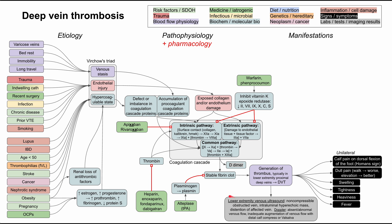The imaging test for DVT is a lower extremity venous ultrasound. Findings may include a non-compressible obstructed vein, an intraluminal hyperechoic mass, or distension of the affected vein. With Doppler, which visualizes blood flow and speed through the veins, you might see absent or abnormal venous flow, or inadequate augmentation of venous flow with distal calf compression or Valsalva maneuver.